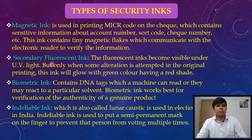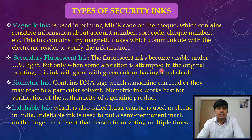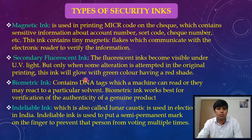The next class is secondary fluorescent ink. Fluorescent inks become visible under UV light, but only when some alteration is attempted to the original printing. When tampering occurs, this fluorescent ink glows with a green color having a red shade.